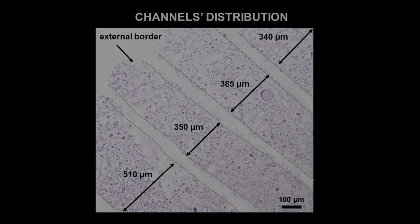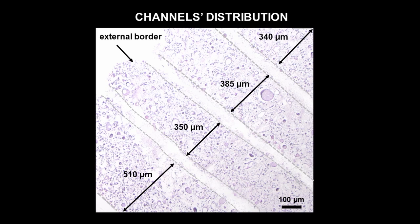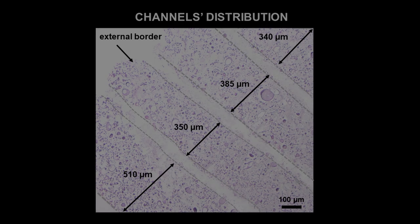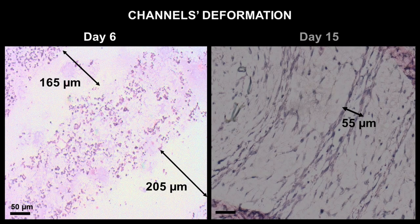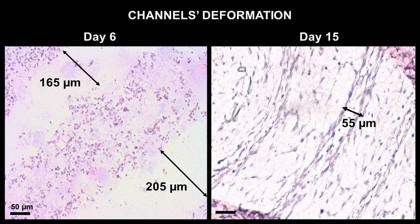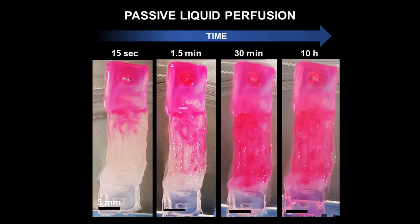The bio-printed channels were homogeneously distributed throughout the matrix and had an initial diameter of 200 micrometers. After two weeks of tissue maturation, the channel diameter reduced to 50 micrometers, which matches the typical size range of arterioles. These channels remained open and could be perfused by staining solutions or cell culture media.